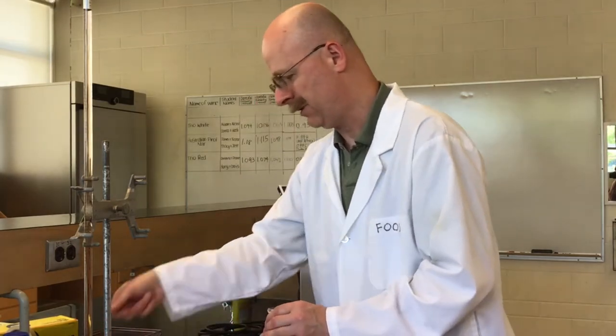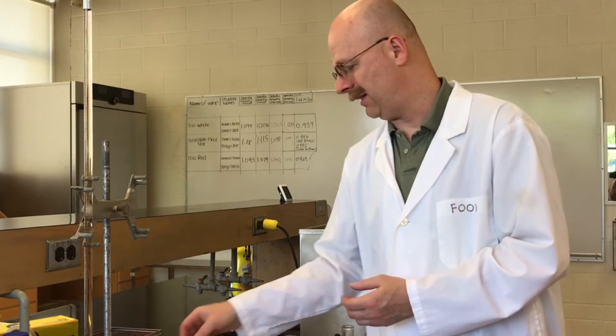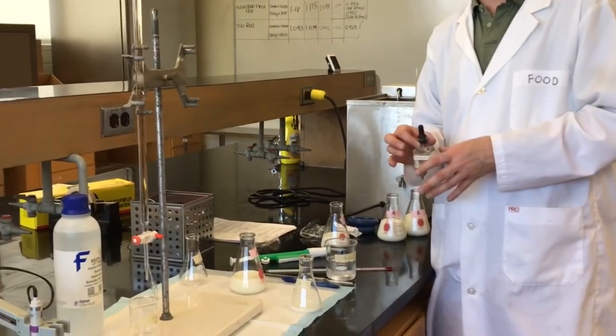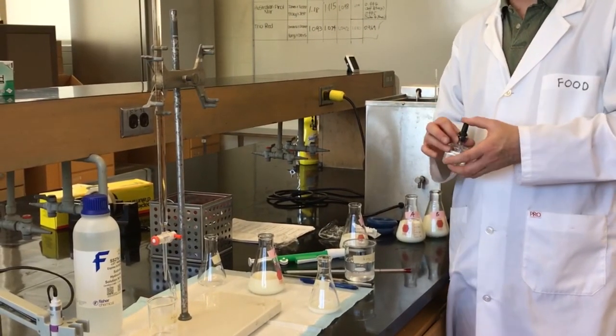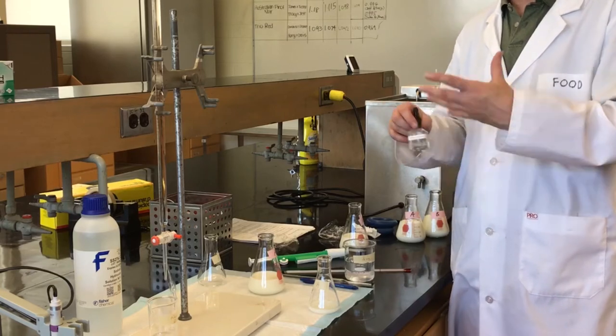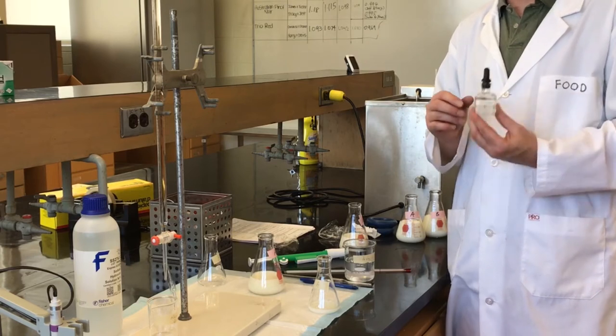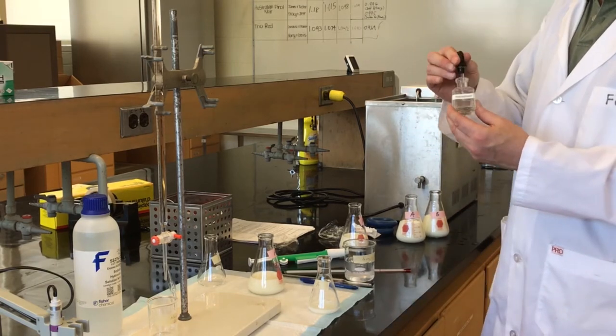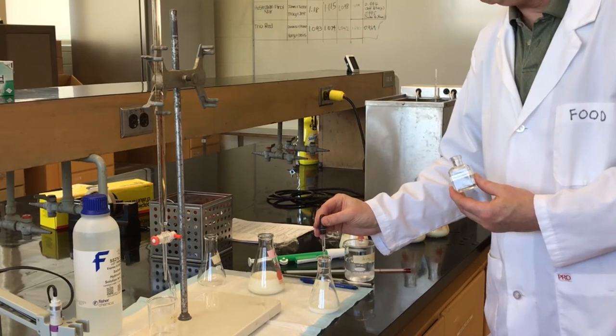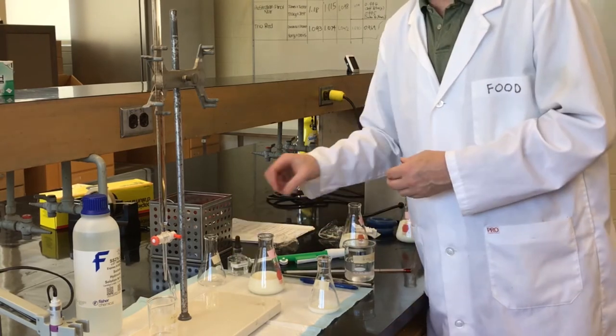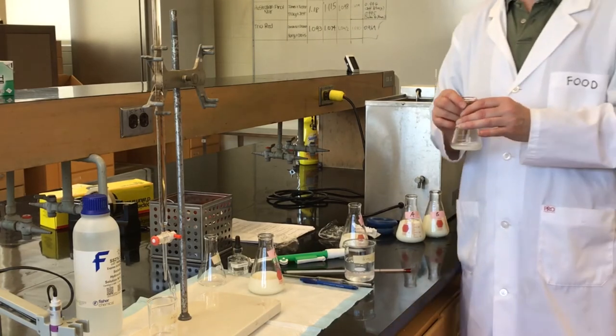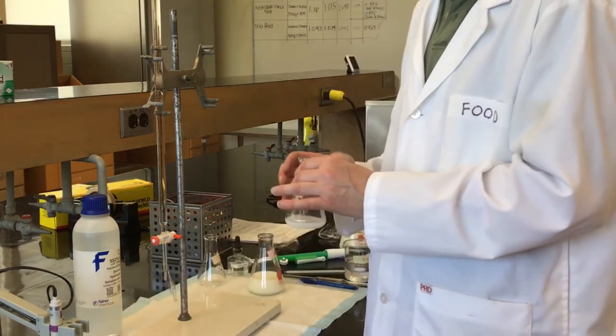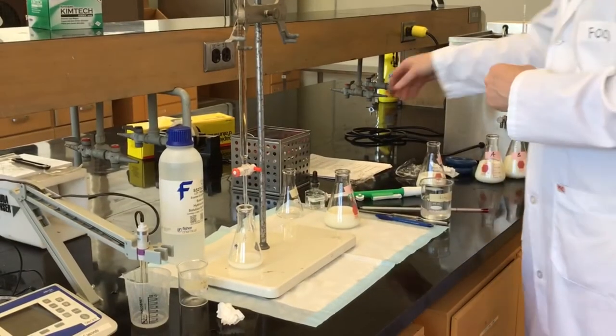Set that aside. So the next thing we need to do is we need to add an indicator. We're looking for a color change. Hopefully you've had an opportunity in some previous life, perhaps in high school, you've done a titration maybe in the chemistry lab. So maybe some of this will seem familiar to you, but we have a product called phenolphthalein. Just don't try and spell it; it's a big long word. This is just going to give us a color change. So just a few drops. Now we're going to titrate our sample. I'll talk a little bit at the end about the difference between pH and TA. Let's for now just go straight through into the procedure.